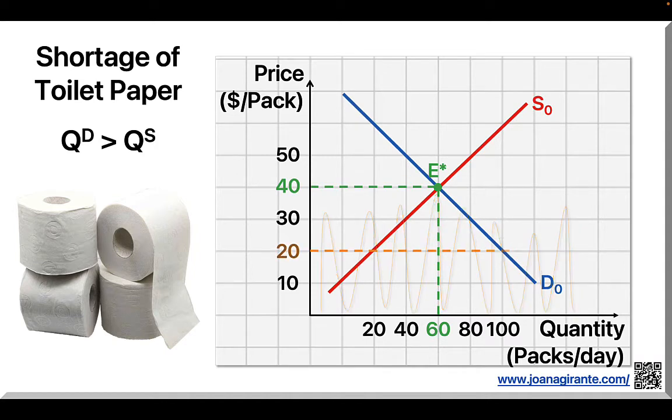Suppose a pack of toilet paper is priced at $20. Looking at the supply curve, we see that at price $20, sellers want to supply 20 packs. Looking at the demand curve, at price $20, consumers want to buy 100 packs.